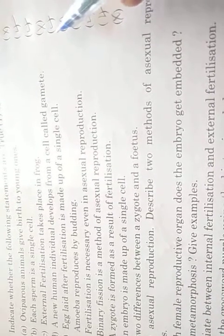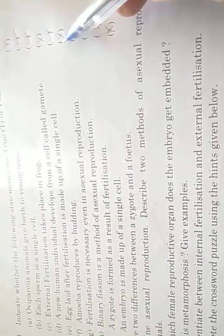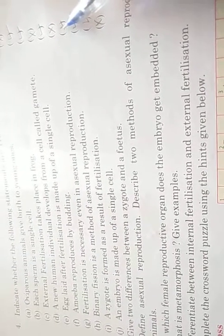A new human individual develops from a cell called gamete - that is the wrong. Number 4: egg laid after fertilization is made up of single cell. Fourth number aapka right hai.